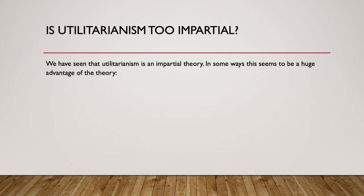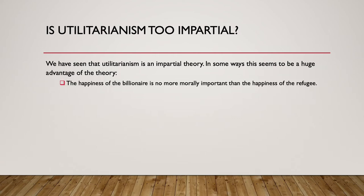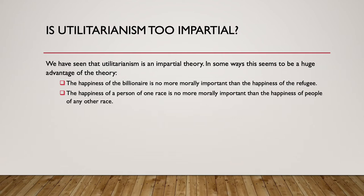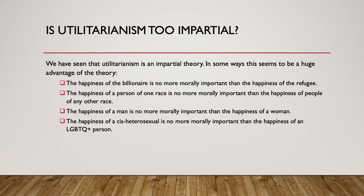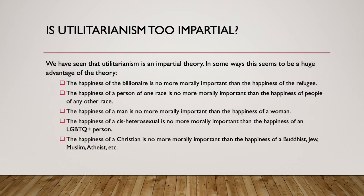The idea is it produces moral rules that do not favor any one person's well-being more than another's. Everybody's well-being is taken into equal consideration and is equally morally important. This seems to be a huge advantage of the theory, especially when we look at history. The happiness of the billionaire is no more morally important than the happiness of the refugee. The happiness of one race is no more morally important than another, and so on. We shouldn't have a moral theory favor the preferences of one group over another.